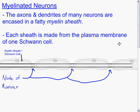This is a review of biology 12, specifically myelinated neurons. The axons and dendrites of many neurons are enclosed in a fatty myelin sheath. Each of these myelin sheaths, as depicted here, is composed of one Schwann cell whose plasma membrane is wrapped many times around the neuron to encase it in that fatty layer. So each sheath is made from the plasma membrane of one Schwann cell.